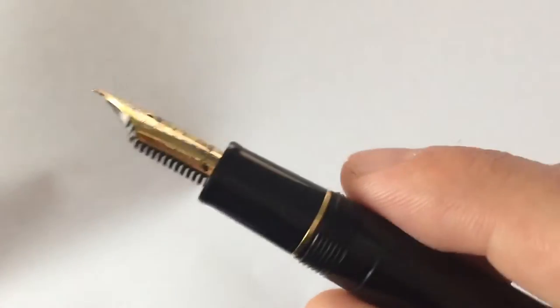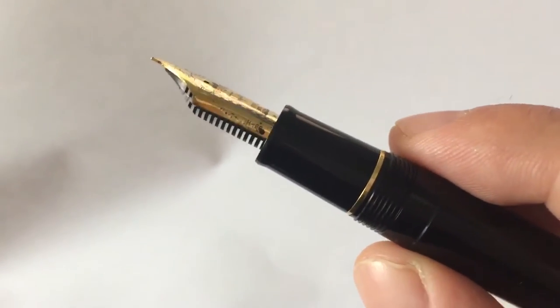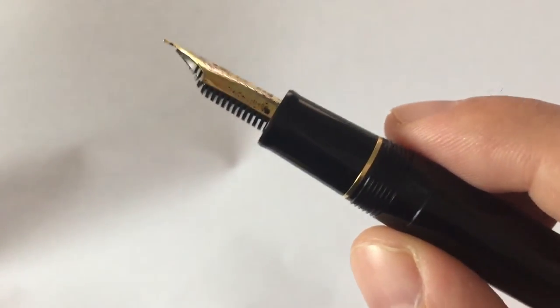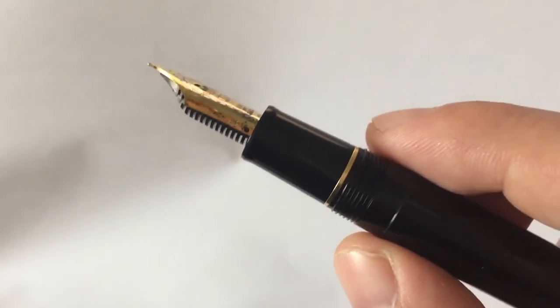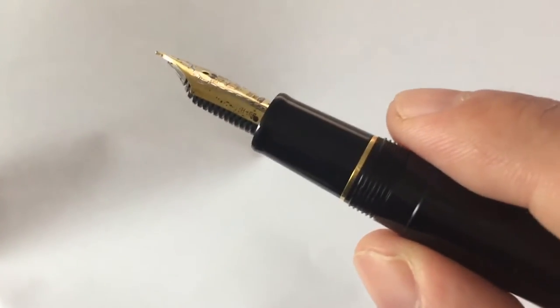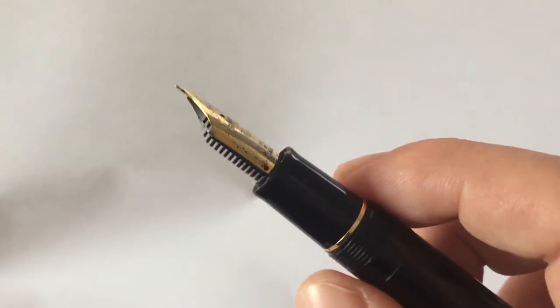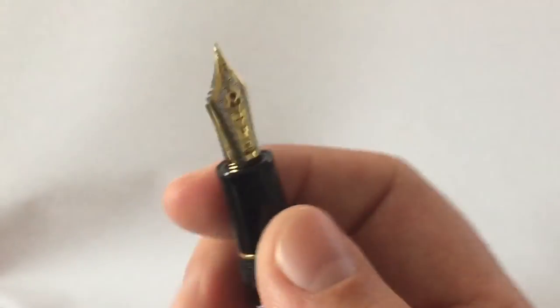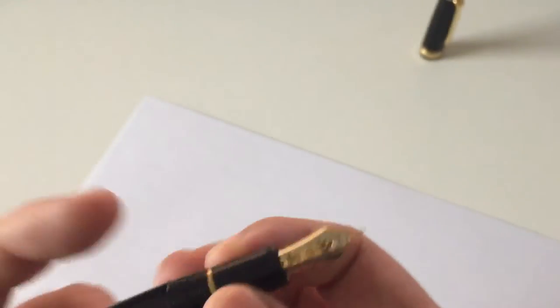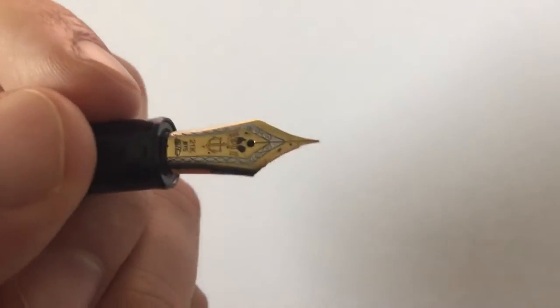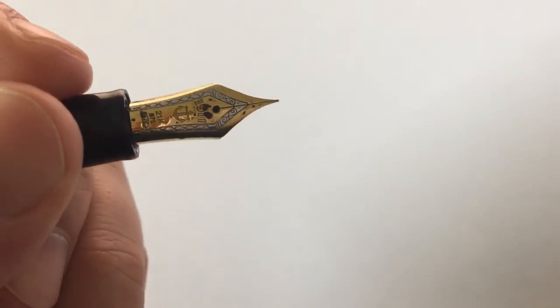So nib options. Sailor has a lot of nib options. It has extra fine, fine, medium, broad. And then there's a lot of special specialty nibs, cross point, music, zoom. Sailor really offers a wide, wide range of nib options. That here, as said, is the hard, extra fine nib.